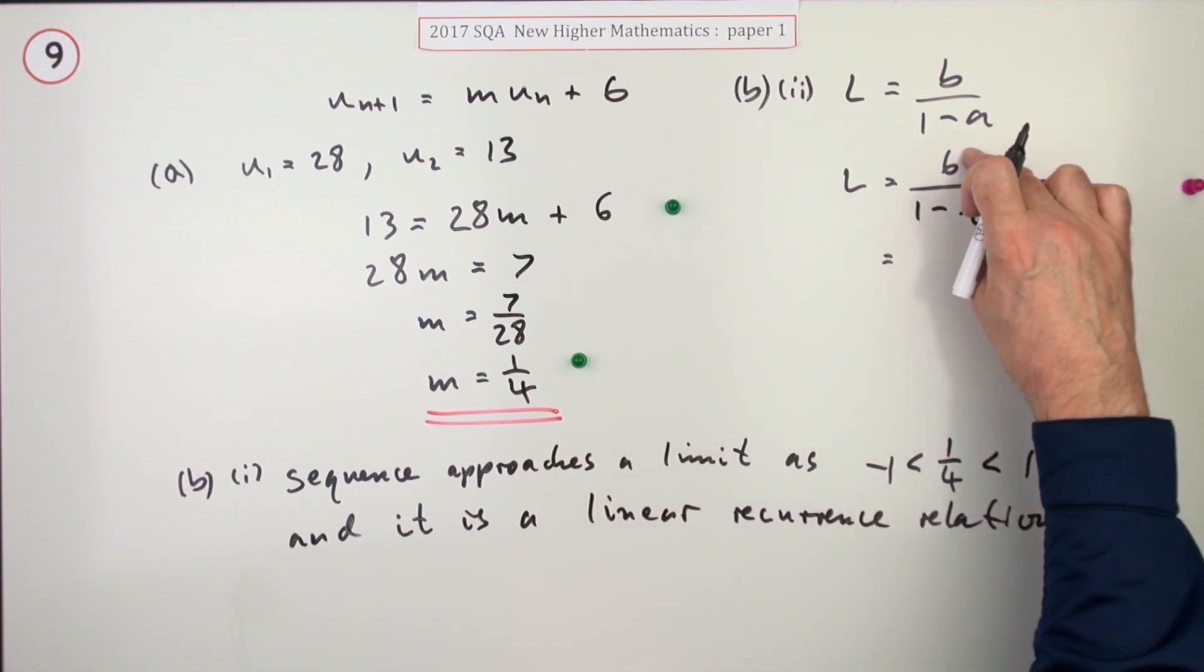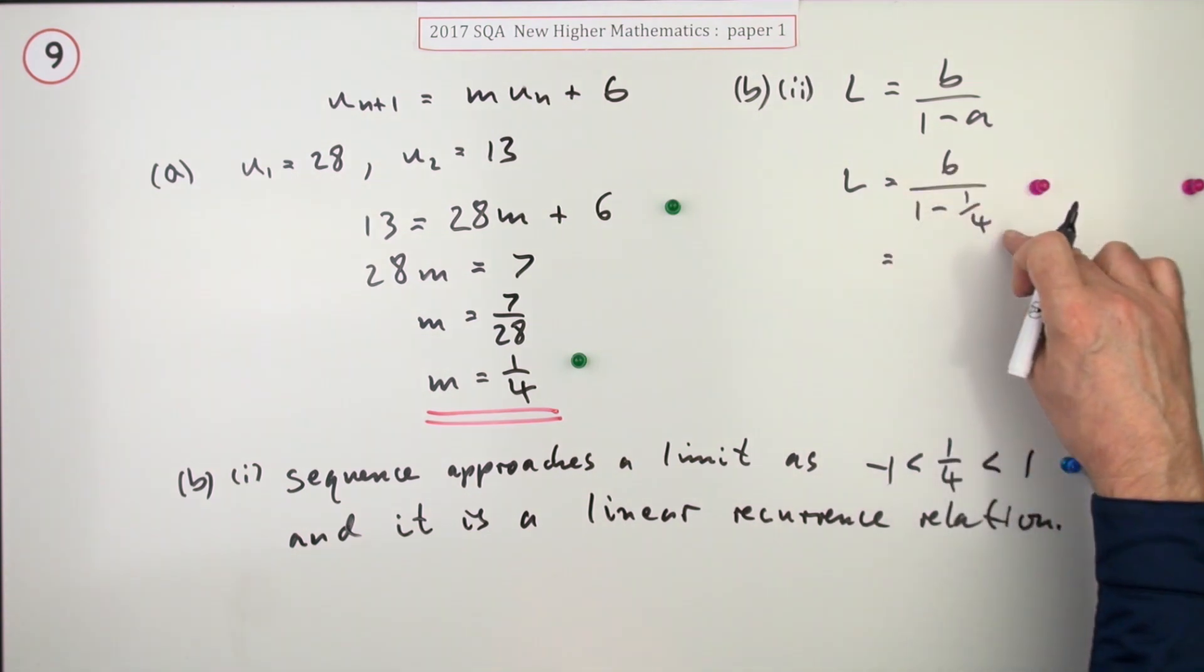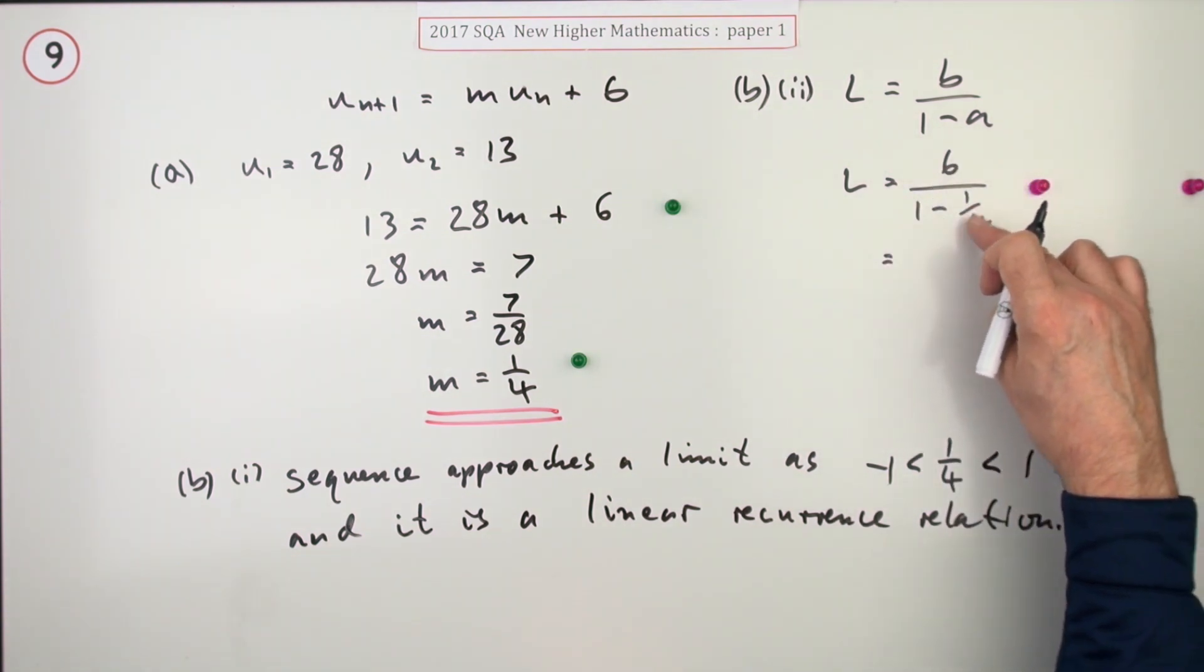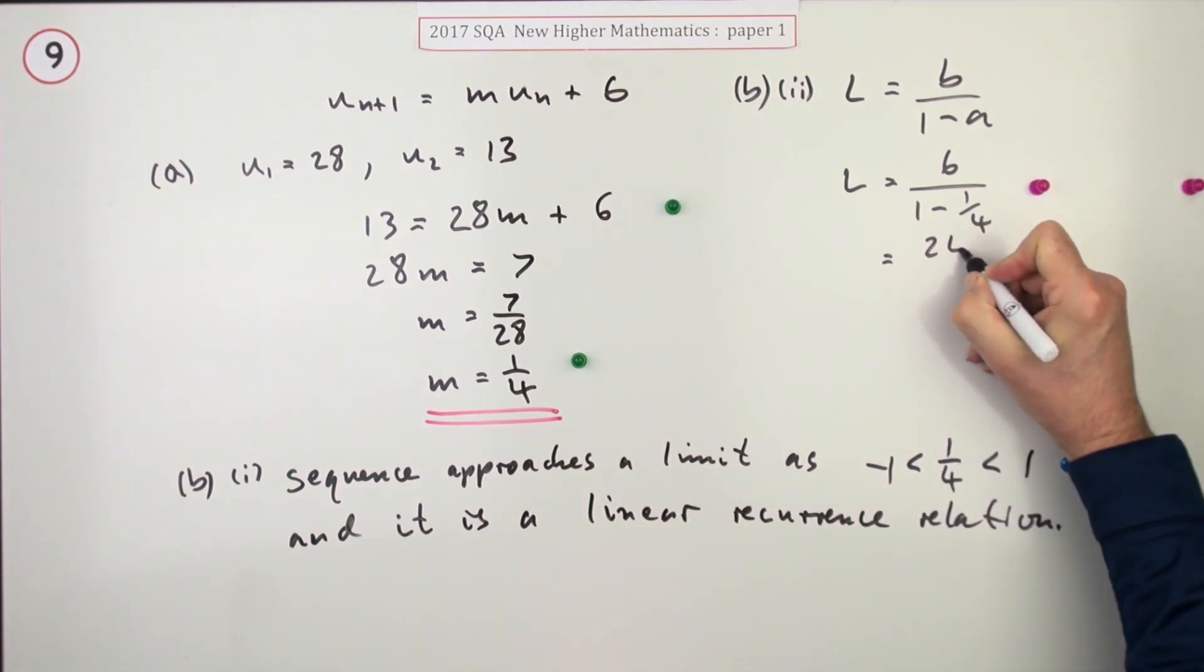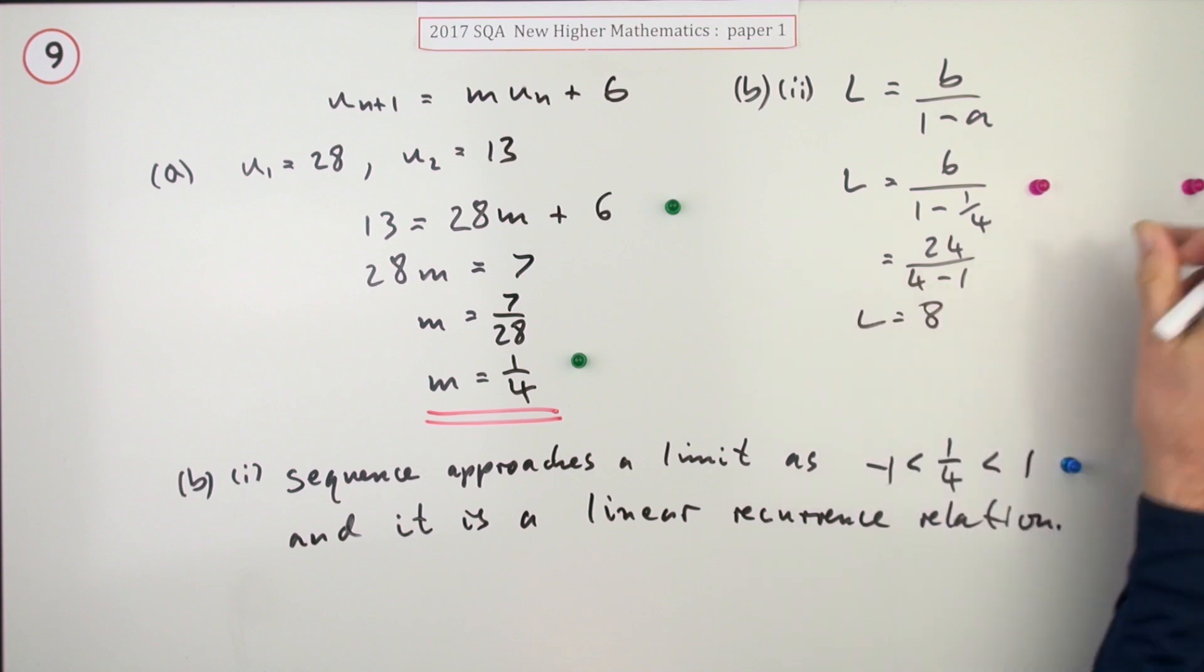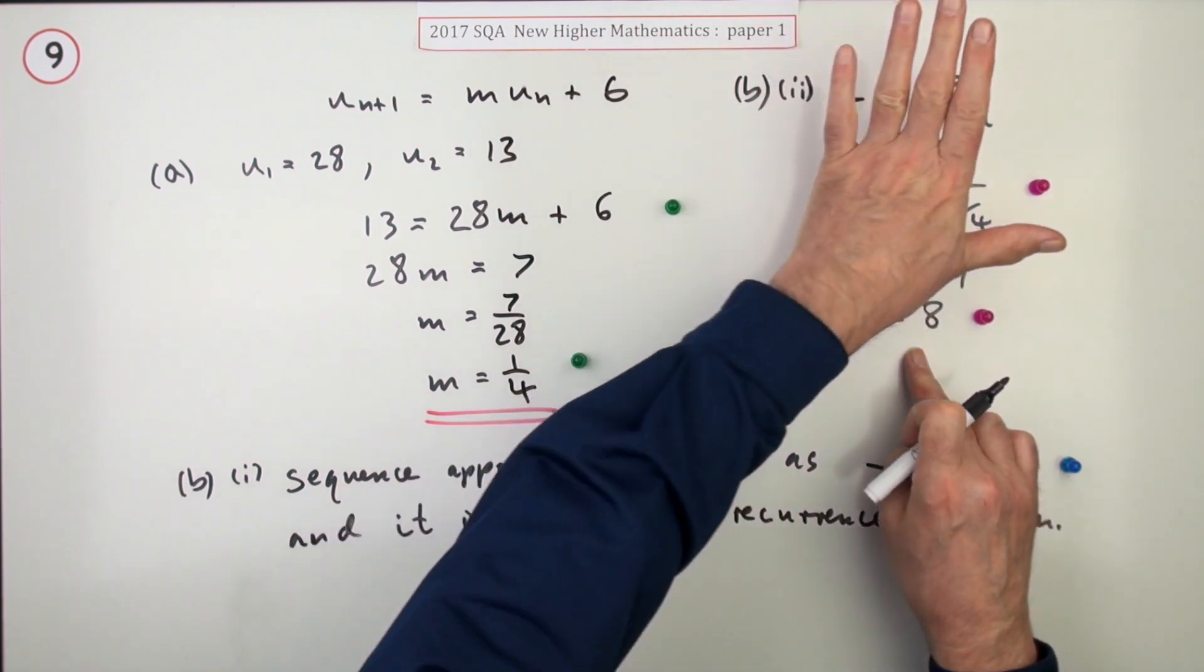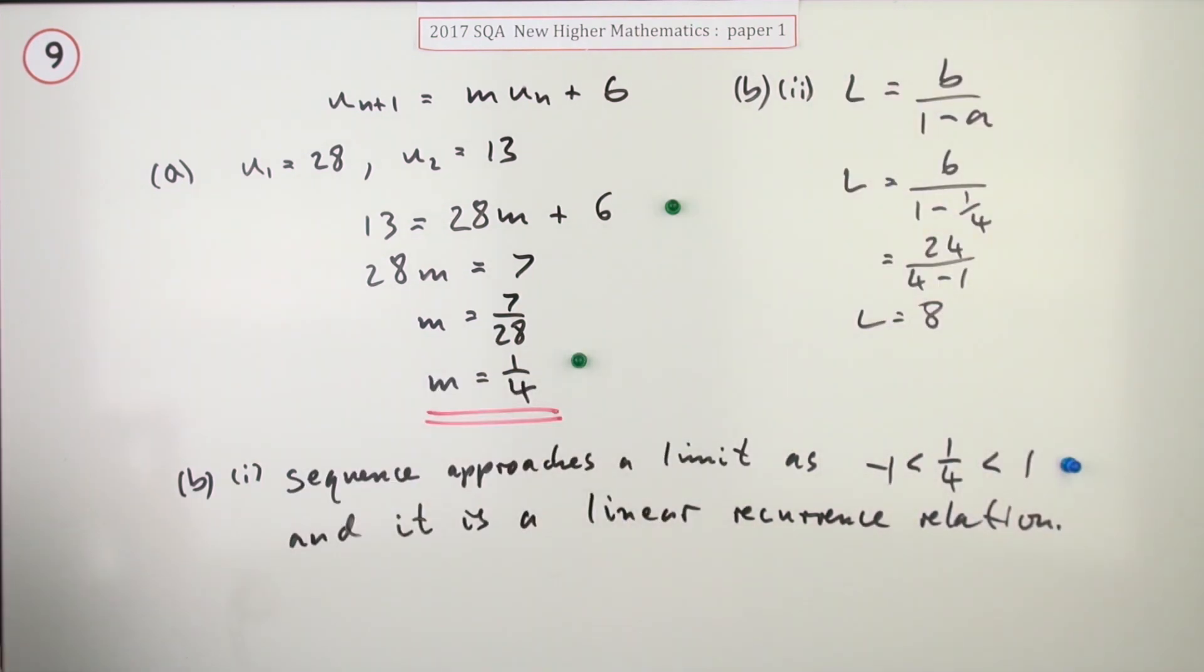You can either think that's 6 divided by 3 quarters, or you could just say multiply everything by 4 to get out of this awkward extra little fraction here. So that would be 24 over 4 minus 1. 3 into 24 is 8. L equals 8 gets the second mark. Put L equals 8 down on its own with no justifying working and you get none of them.